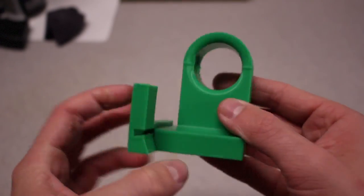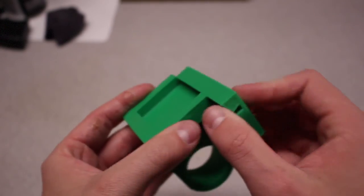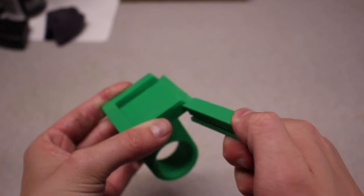Now, how this works is it slips over the PVC pipe of my tripod, and then this little piece slides on here to hold the camera onto the piece.